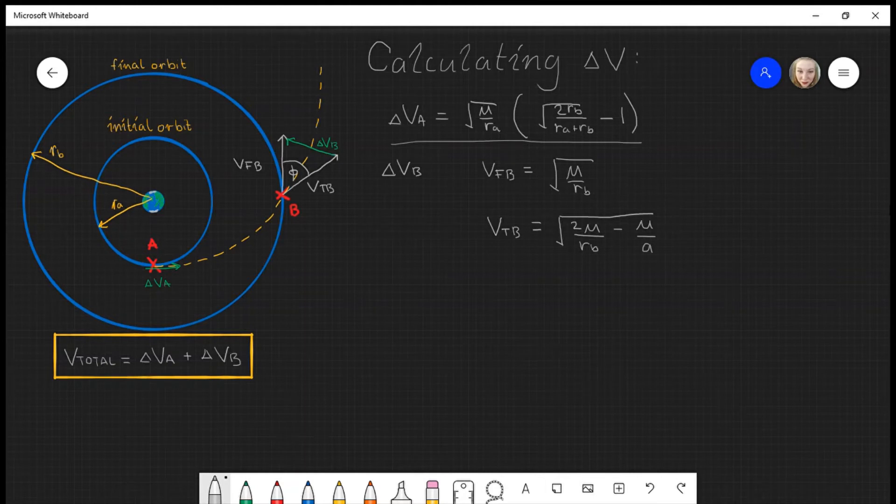Therefore, to calculate delta V_B in full, we can use the cosine rule.